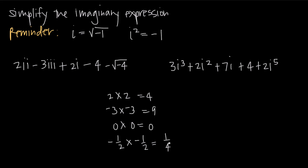We can never get a negative number when squaring. So why is that a problem? Well, what if we want to find the square root of something like negative 9? If we take the square root of 4, we get 2. The square root of 9 gives us negative 3 or positive 3. The square root of 0 is 0. The square root of 1 fourth gives positive or negative 1 half. But taking the square root of a negative number seems impossible.